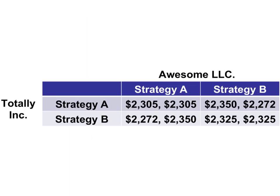When reading a game theory matrix, the firm that's on the left — in this case Totally Ink — will have their payouts on the left side of each cell. The firm that's on the top, Awesome LLC, has its payouts on the right side of each cell.